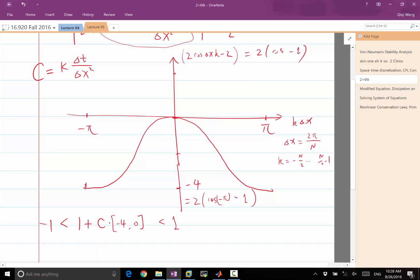The less than 1 part is automatically satisfied because as long as C is positive, the maximum of this number 2 cosine k delta x minus 2 is going to be 0. But the greater than minus 1 part is not going to be automatically satisfied.